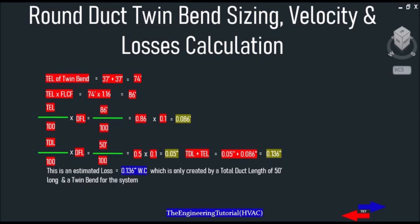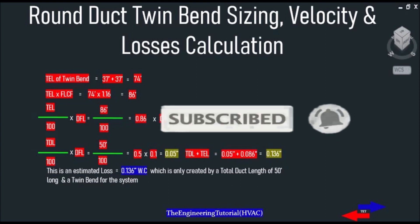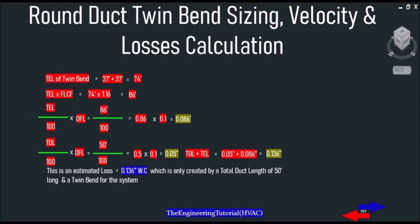So we have a total equivalent length of 37 feet plus 37 feet equals 74 feet. If we multiply the total equivalent length of 74 feet by a fitting loss conversion factor of 1.16, we get a corrected total equivalent length of 86 feet for our round tee-band. Then if we divide the total equivalent length of 86 feet by 100 and multiply by a design friction loss of 0.1, we get a loss of 0.086 inch of water column.